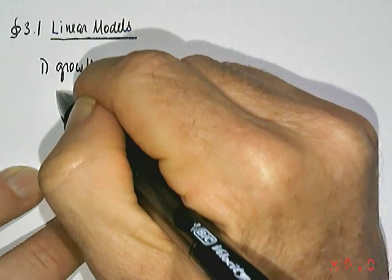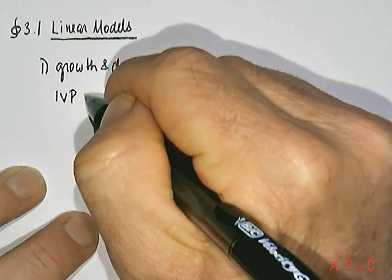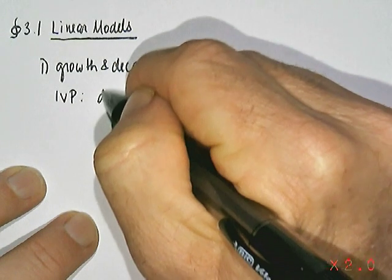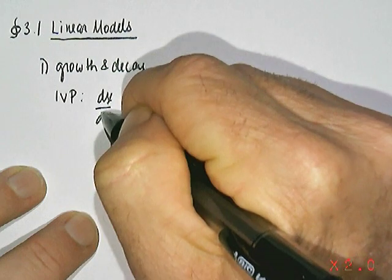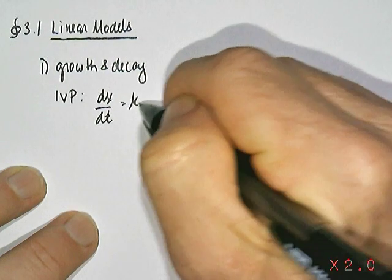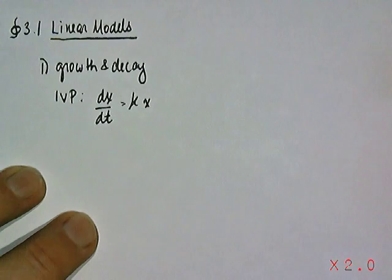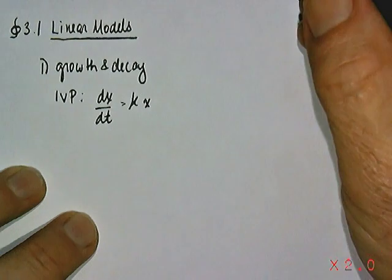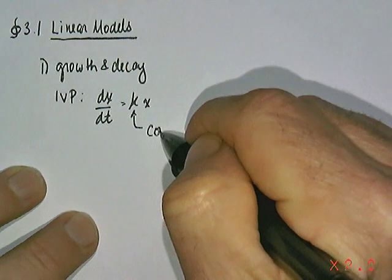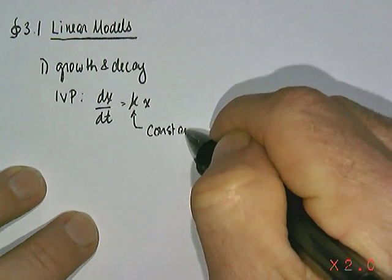The basic IVP, initial value problem associated with these types of linear models, looks something of this form, where you have a quantity which you're looking at the rate of change of, dx dt, being proportional to the amount of substance that you have currently. So the form would be k times x, where k is some constant, a constant of proportionality.